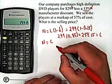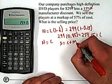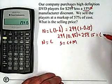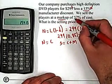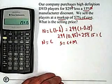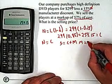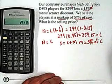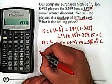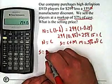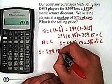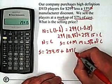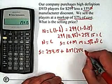Now that we have the cost, let's figure out the selling price. Selling price equals cost plus markup. The cost was $254.15. The question goes on to say that the markup is 57% of the cost, so markup equals 57% of C. Therefore, S equals 254.15 plus 0.57 times 254.15.